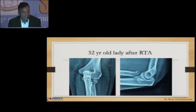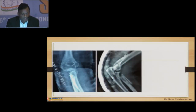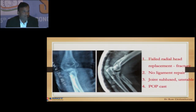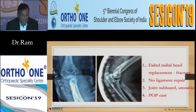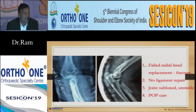A 32-year-old lady after a road traffic accident had a comminuted fracture of the proximal radial head. The surgeon attempted a radial head replacement which failed, so the proximal radius cracked further. No ligament repair was possible. The joint is subluxed and unstable. POP cast was applied and sent to me. What can we do? Nothing will work. So please do no harm.